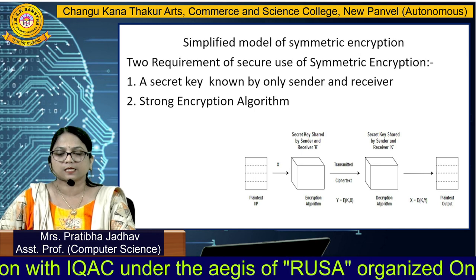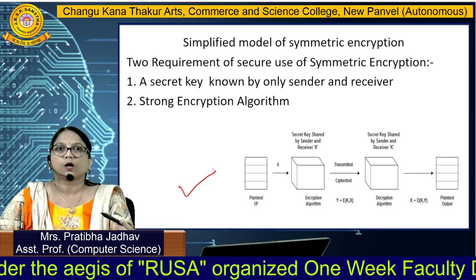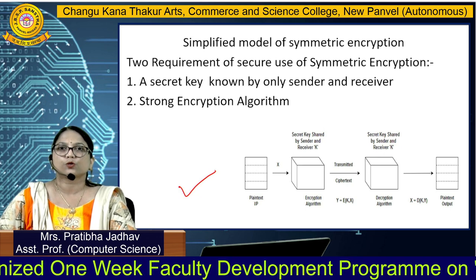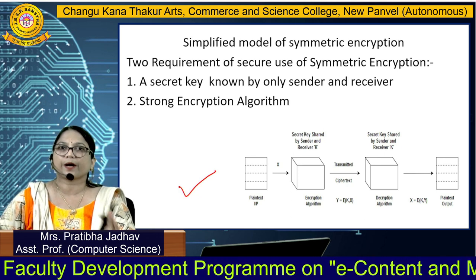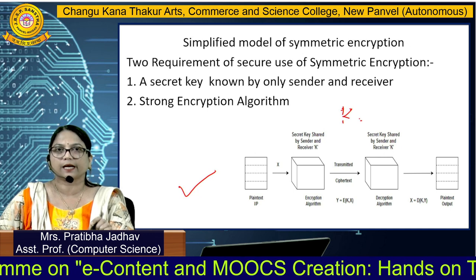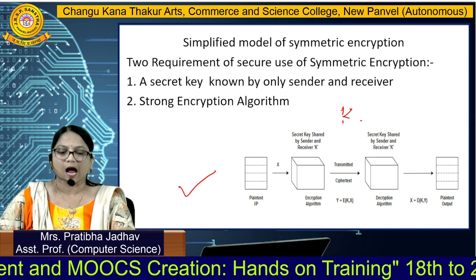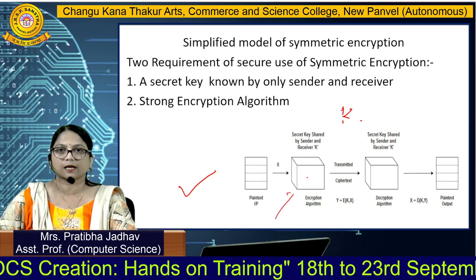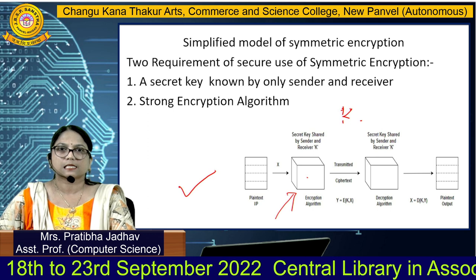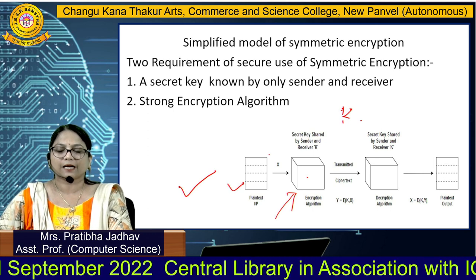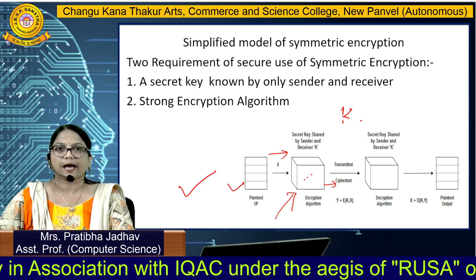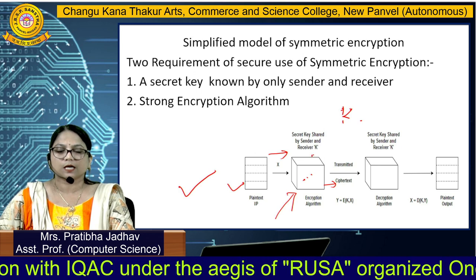In the symmetric encryption model, the main purpose of encryption is to protect your data or information. There are two key requirements: the secret key, denoted as K, and the encryption algorithm, which should be strong enough. The plaintext is denoted as X, and X is converted into ciphertext using the encryption algorithm with secret key K.